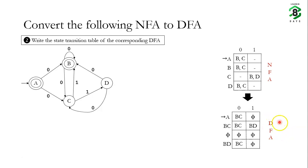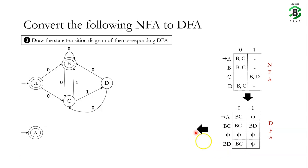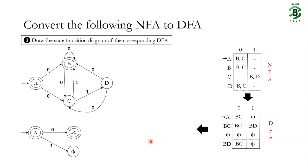Now we convert this state transition table into the corresponding state transition diagram. We start from the initial state A. Since A was a final state in the NFA, it is also a final state in the DFA. On state A with input 0, the machine goes to state BC; on input 1, it goes to trap state phi. On state BC with input 0, the machine remains in BC; on input 1, it goes to state BD.